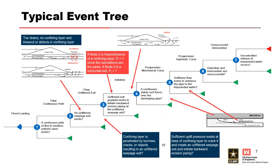In the typical backward erosion piping event tree, node 1 relates to geologic conditions or material susceptibility, and node 2 relates to the presence of an unfiltered exit. Nodes 3 and 5 adjust the hydraulic conditions for initiation and progression of backward erosion piping respectively. Node 4 assesses the mechanical condition for progression — in other words, roofing. Nodes 6 and 7 are unsuccessful intervention and breach respectively. These four nodes are the focus of this presentation; the other nodes are discussed in separate presentations.